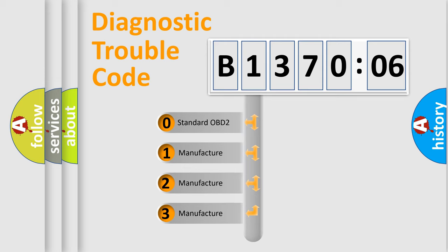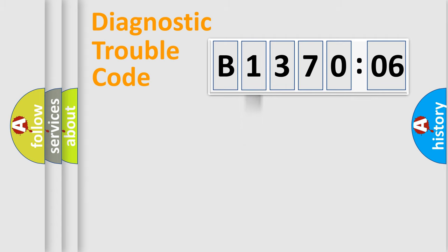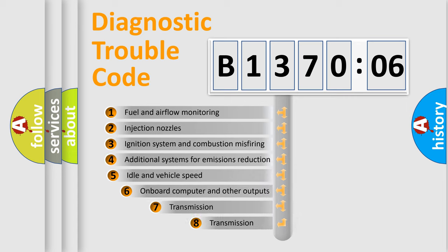If the second character is expressed as zero, it is a standardized error. In the case of numbers 1, 2, or 3, it is a more prestigious expression of the car-specific error.